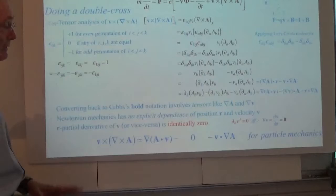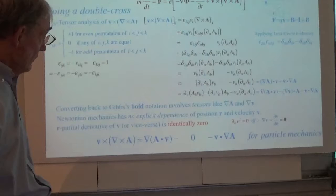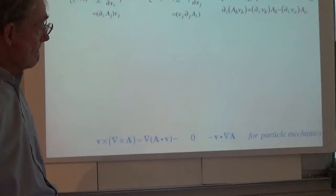V cross B equals the gradient of the dot product of A and V, minus V dotted into the weird tensor — the gradient of A, which is a whole matrix. When dotted it makes a vector of the same rank as the gradient. The tensor index notation helps you unravel the Gibbs notation and make it more usable — much more unambiguous and explicit.